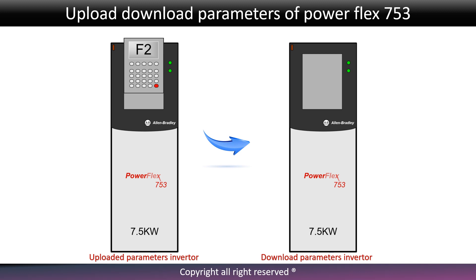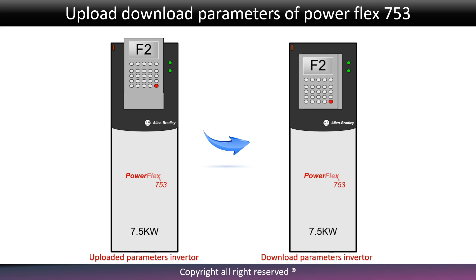Press the ESC button to exit the copycat files screen. Then remove the HIM from the inverter and plug it into where the required download parameters are needed.